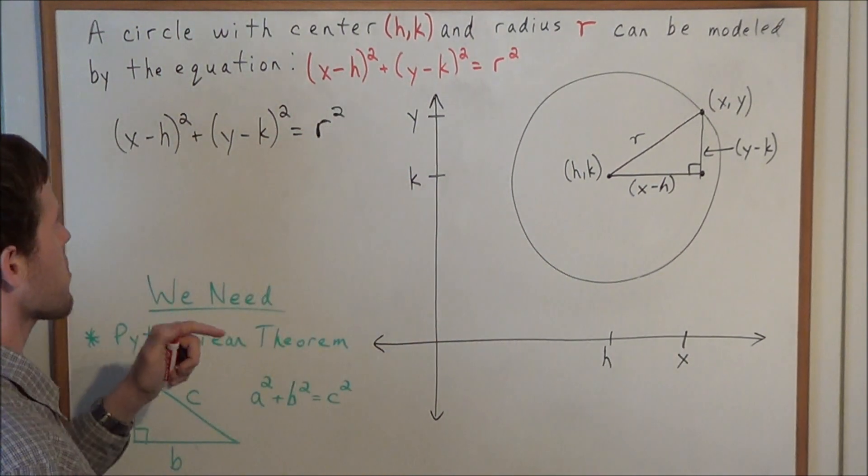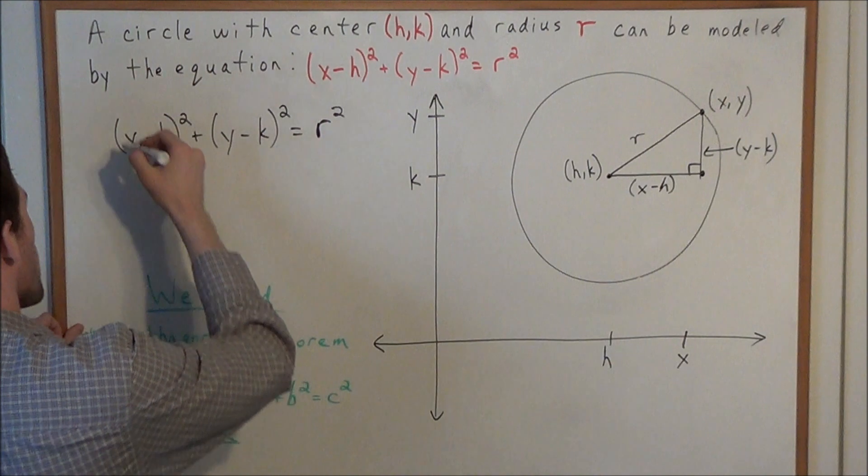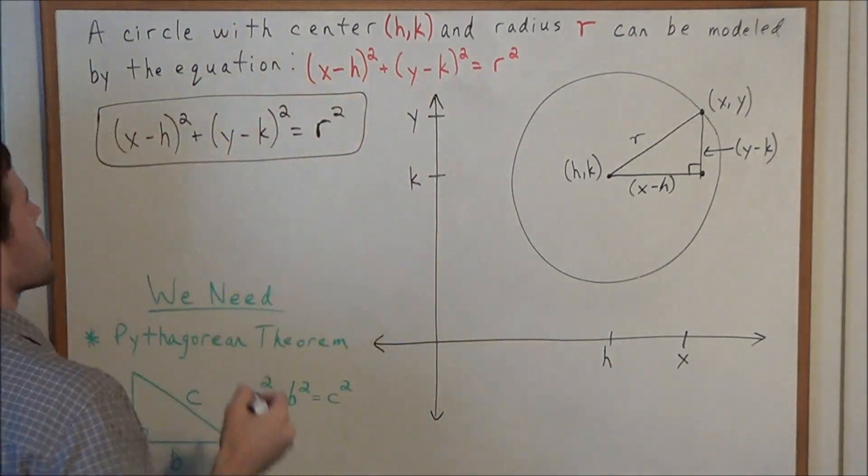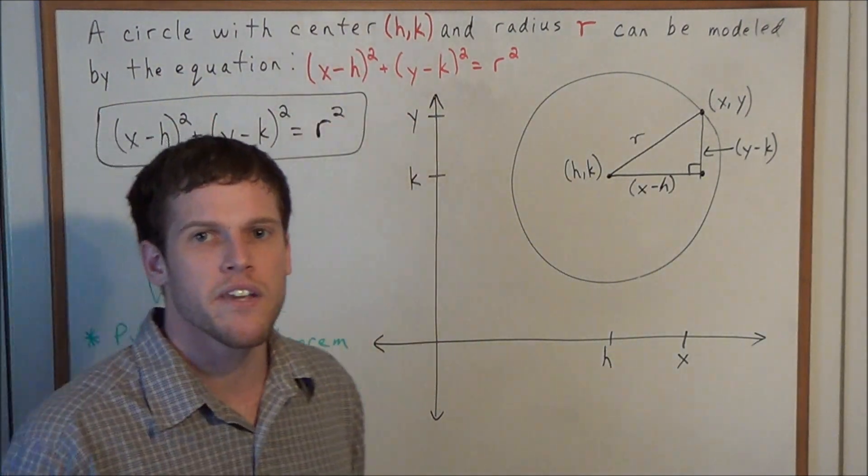So now when we apply this Pythagorean theorem to this circle, we derive the equation of the circle for a circle centered at (h,k) with radius r.